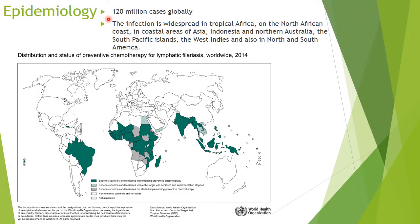There are 120 million cases globally per year. The infection is widespread in tropical Africa, the northern African coast, coastal areas of Asia, Indonesia, northern Australia, southern Pacific islands, the West Indies, and northern South America. This is the prevalence of filariasis as shown by the WHO map.